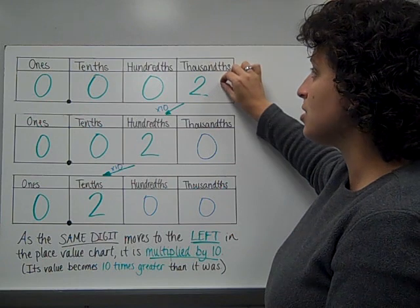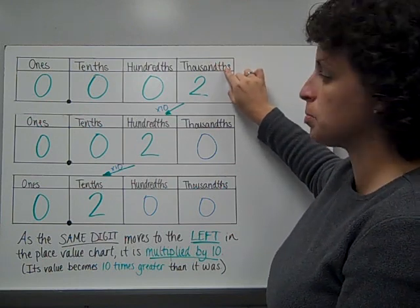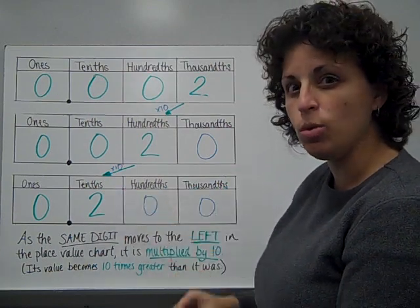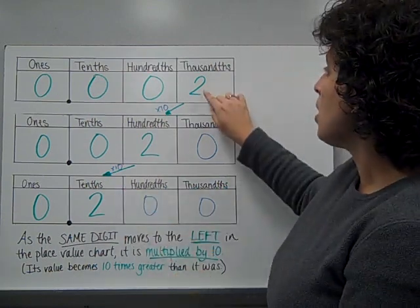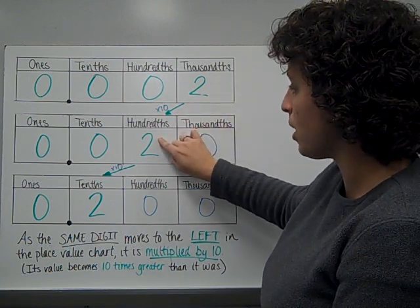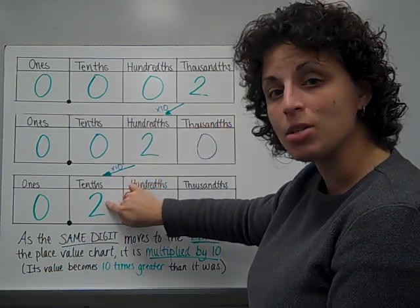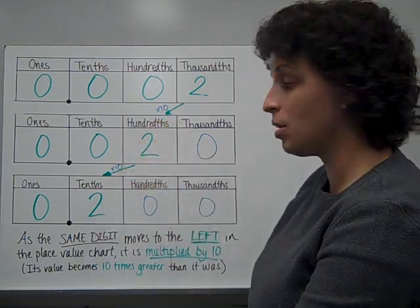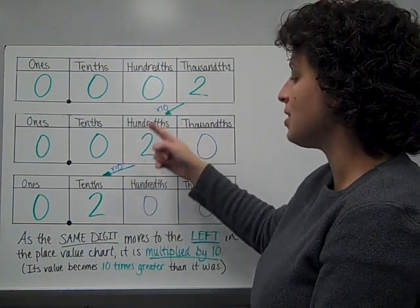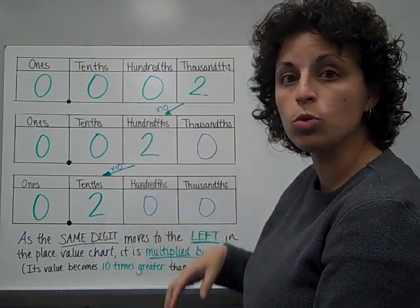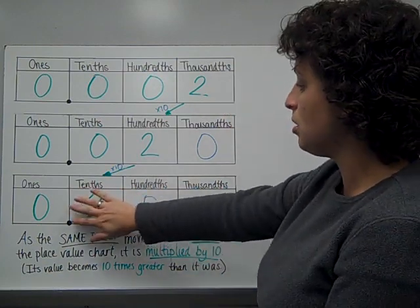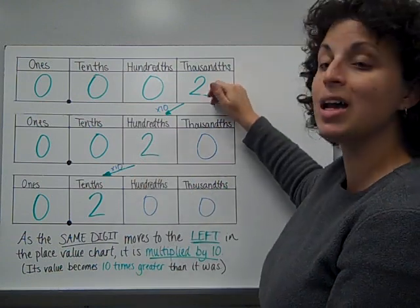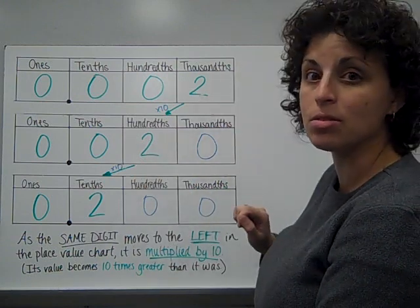Now, if I was going to compare this two in the thousandths place to this two in the tenths place, then I have to see how many moves it has made to know how much greater it was. It moved one time to get to the hundredths place, and then a second time to get to the tenths place. Since every move in the place value chart to the left is ten times greater, then it's ten times ten, which would be a hundred times greater. So, this two in the tenths place, because it moved twice, would be a hundred times greater than the two in the thousandths place.